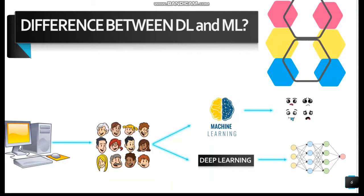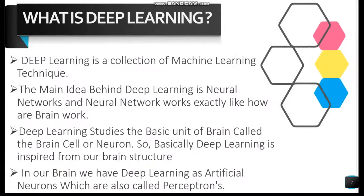Then the system identifies which features are most important for each person. With deep learning for the same example, deep learning will automatically find the features important for classification because it uses the concept of neural networks. In machine learning, we have to find every facial feature manually. Deep learning is a collection of machine learning techniques. The main idea is neural networks, which work like the brain. It studies the basic unit of the brain — neurons — and replicates them as artificial neurons, also called perceptrons.